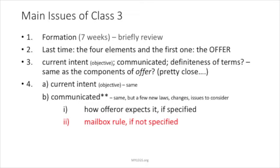A big part of today's material is the communication aspect. If the offeror wants the acceptance to be communicated in a particular way, it has to be communicated in that way. If the offeror does not specify exactly how the acceptance must reach the offeror, the law applies a default rule — which can be changed if the parties choose — called the mailbox rule. This provides some level of certainty on the moment of acceptance. The general rule is: when the offeree puts the acceptance out of his, her, or its control — properly dispatched — that acts as an acceptance at that moment, even though it has not yet reached the knowledge or hand of the offeror.